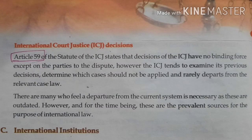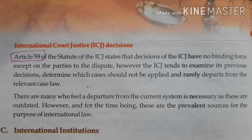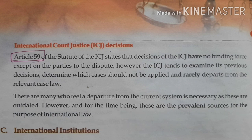The next topic is the International Court of Justice. Article 59 of its statute states that ICJ decisions have no binding force except on the parties to the disputes. However, the ICJ tends to examine its previous decisions, determines which cases should not be applied, and rarely departs from relevant case law. The ICJ examines previous decisions of similar types of cases and gives importance to previously decided cases, deciding accordingly.